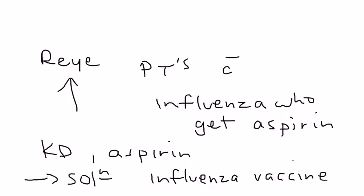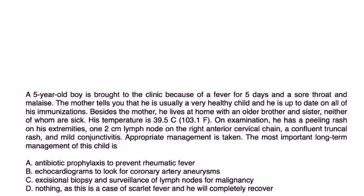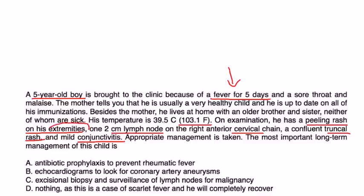Vignette one: a five-year-old boy is brought to the clinic with fever for five days, sore throat, and malaise. He is up to date on immunizations. Temperature is 103. He has a peeling rash on his extremities, a two-centimeter lymph node on the right anterior cervical chain, a confluent truncal rash, and conjunctivitis. He meets the diagnostic criteria — fever plus four criteria: extremity involvement, cervical lymphadenopathy, truncal rash, and conjunctivitis — so he has Kawasaki disease.